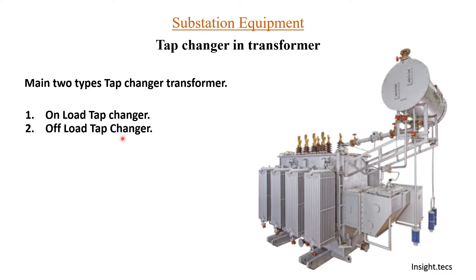Offload tap changers are generally seen in transformers having smaller capacity — about 100 kVA, 200 kVA, and up to 500 kVA. But these transformers have to be in such a way that they have the possibility of turning off easily. This kind of offload tap changer cannot be provided to any industry which is running for 24 hours, as any disturbance for changing of tap will hamper the industry power supply. So in cases where it is okay to turn off the transformer for some time and do the tap changing process, we use offload tap changers. Otherwise, for higher capacity transformers and transformers which cannot be turned off easily, we always use onload tap changers.